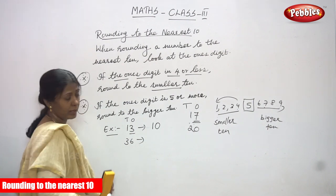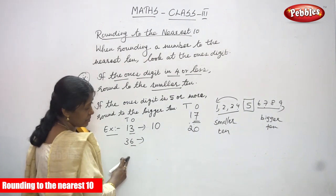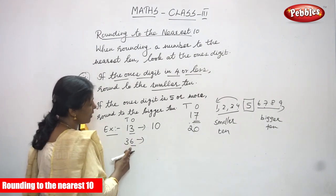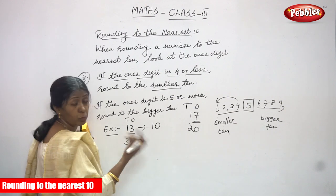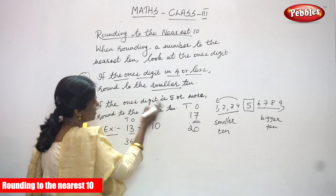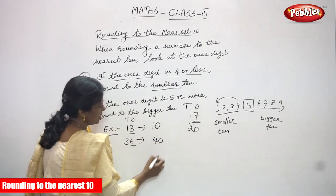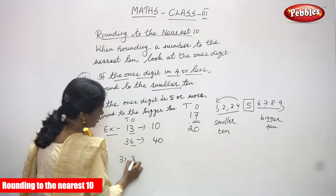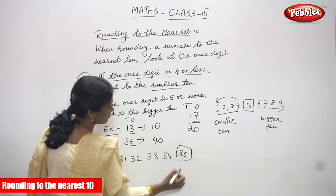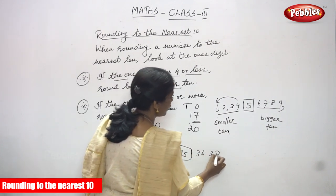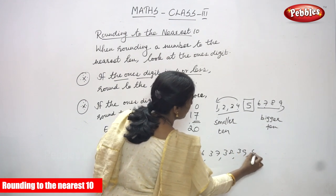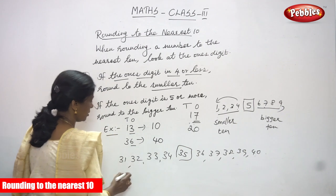That is 36. Look at the ones digit — it is 6. This number is 5 or more. If the ones digit is 5 or more, you have to round to the bigger 10. The numbers go: 31, 32, 33, 34, 35 — 35 is the middle number — then 36, 37, 38, 39, and 40.